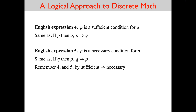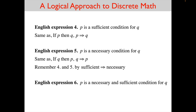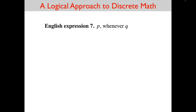You can remember which is which by the phrase 'the sufficient implies the necessary.' Combining both: if you say 'P is a necessary and sufficient condition for Q,' that means P is necessary for Q and P is sufficient for Q, which means both P implies Q and Q implies P — and we saw before that this is the same thing as P equalveils Q.